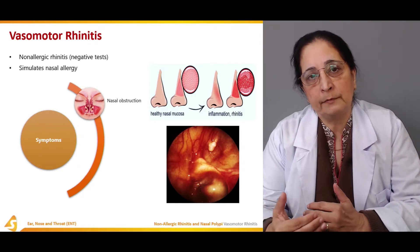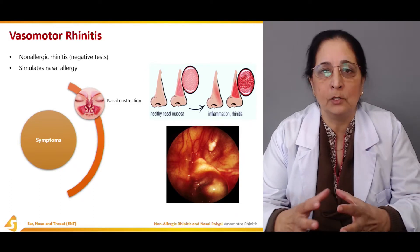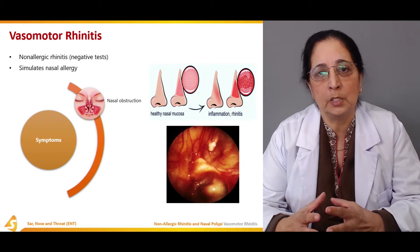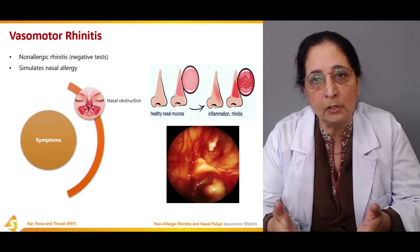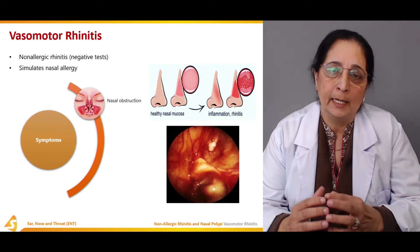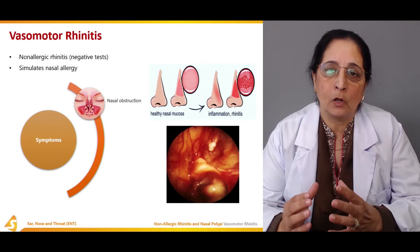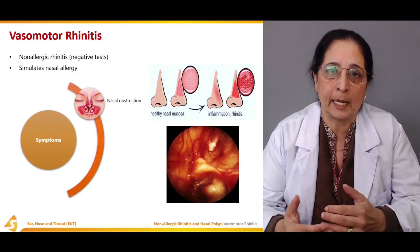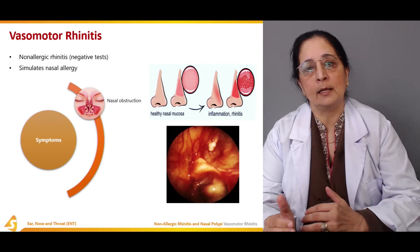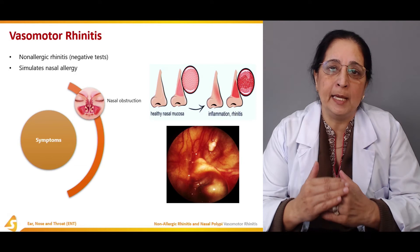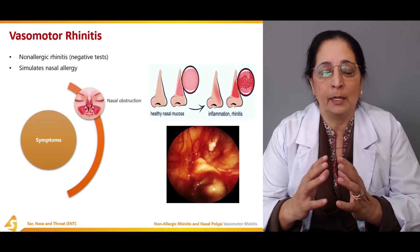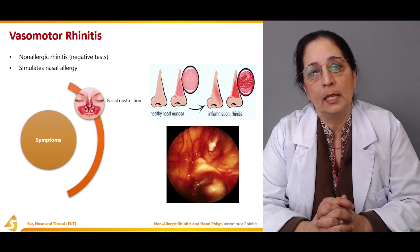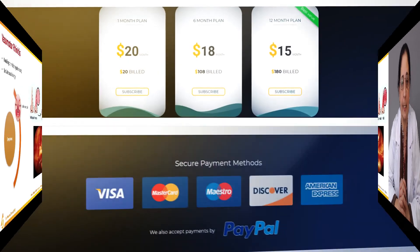The symptoms of vasomotor rhinitis include nasal obstruction, similar to allergic rhinitis. With any type of inflammation, whether non-allergic or allergic, symptoms are produced due to swelling of the nasal mucosa, which causes obstruction and increased mucus production. The main changes are the same, but the key difference lies in the causative agents and how they lead to the development of rhinitis.